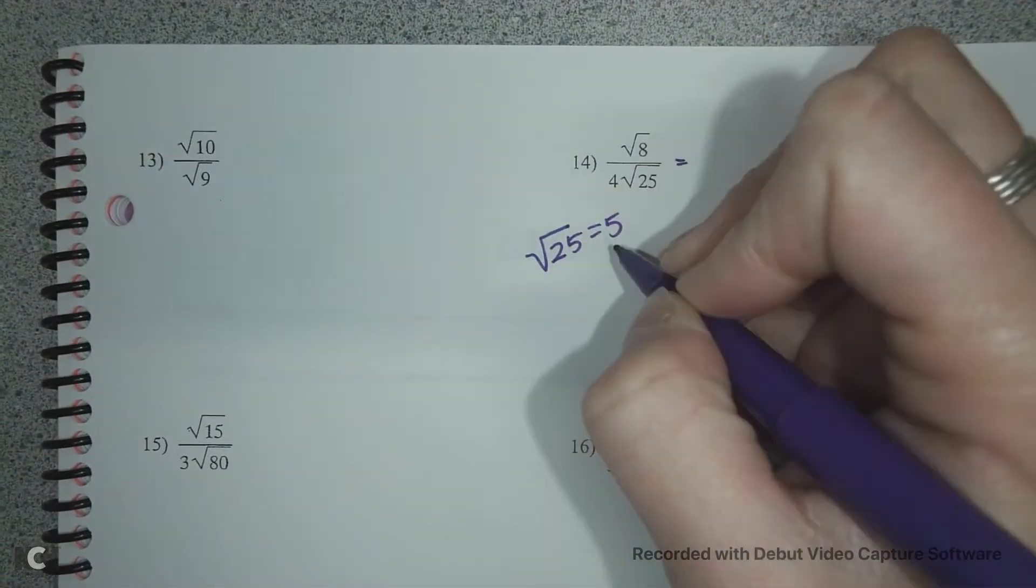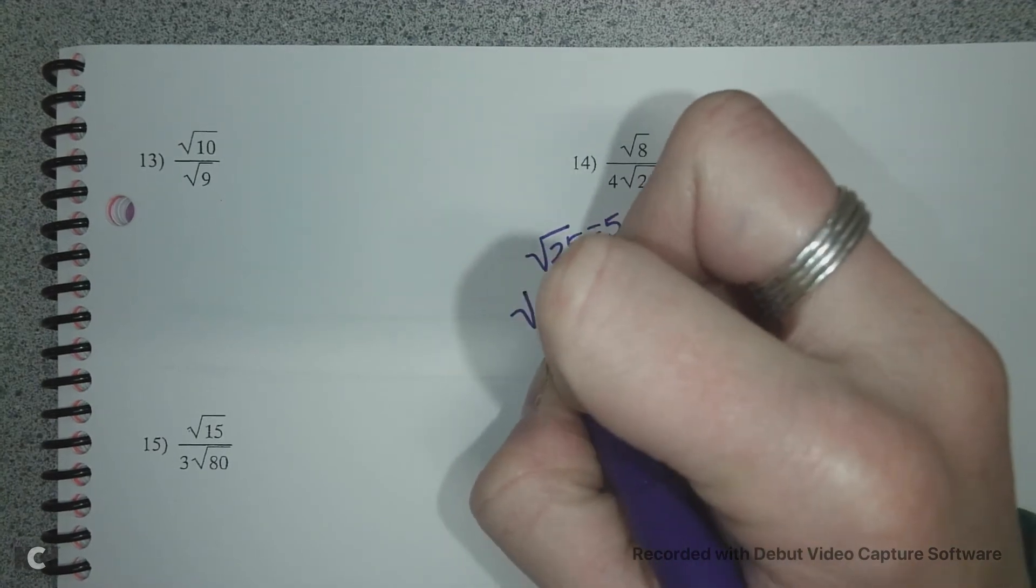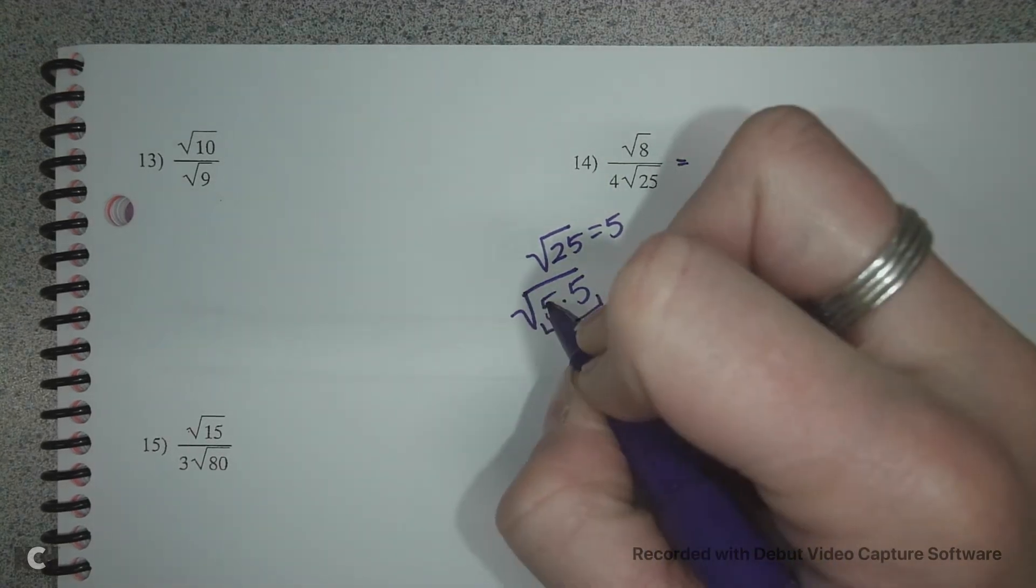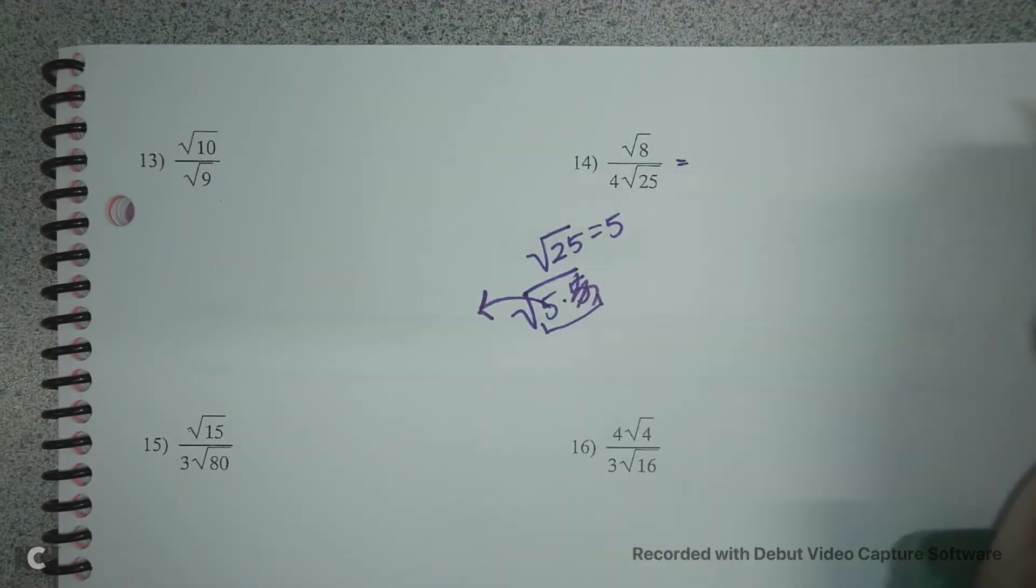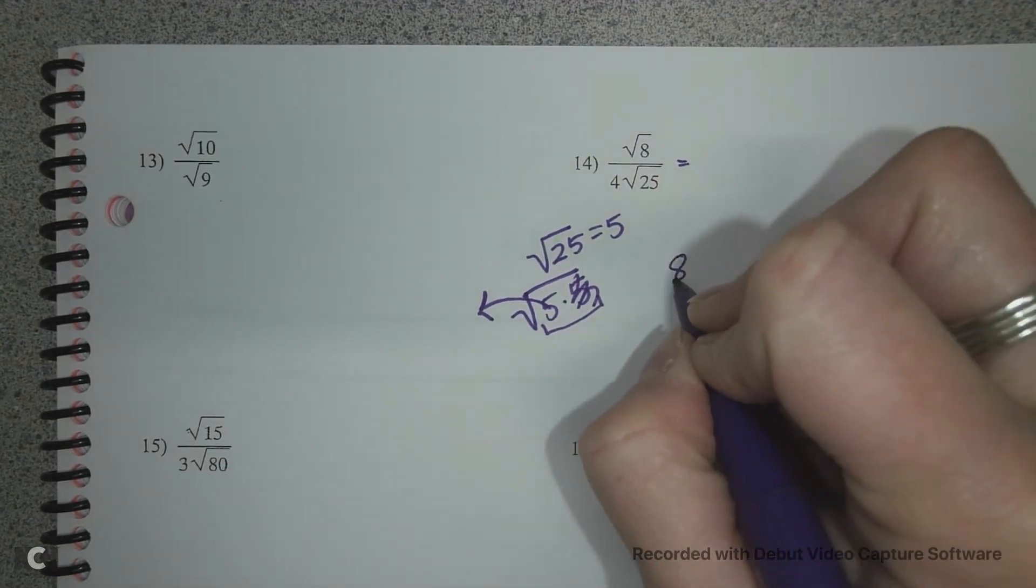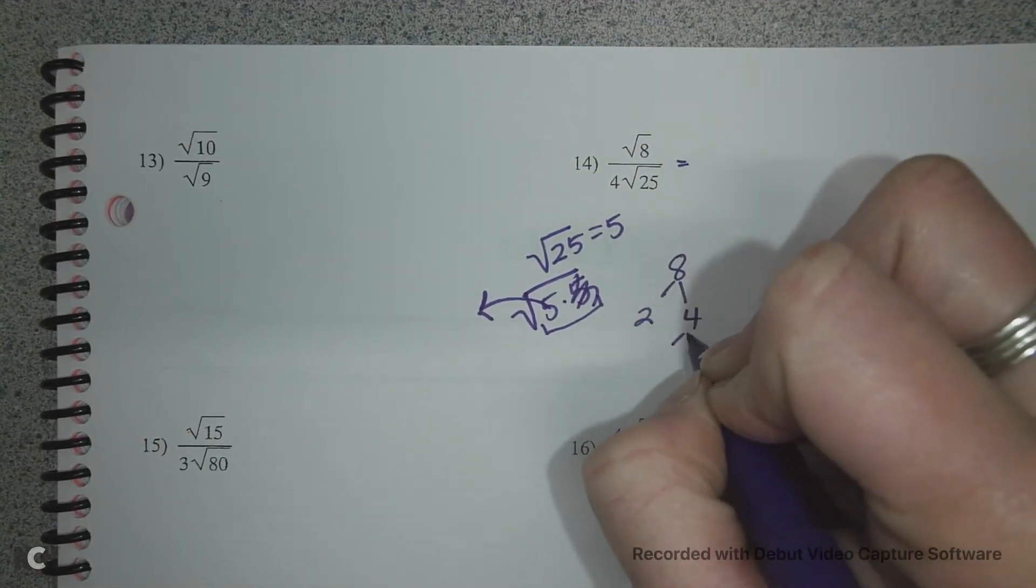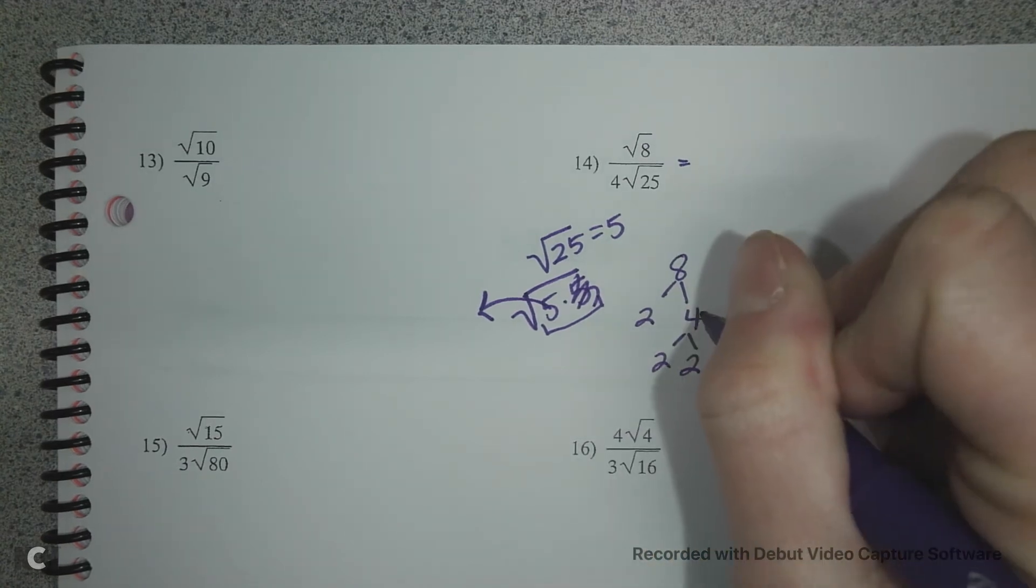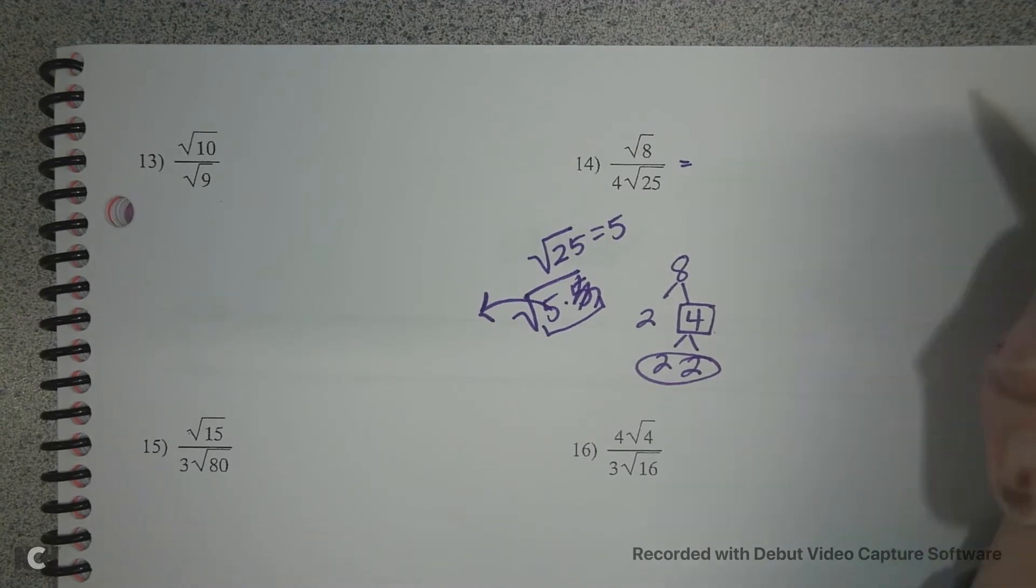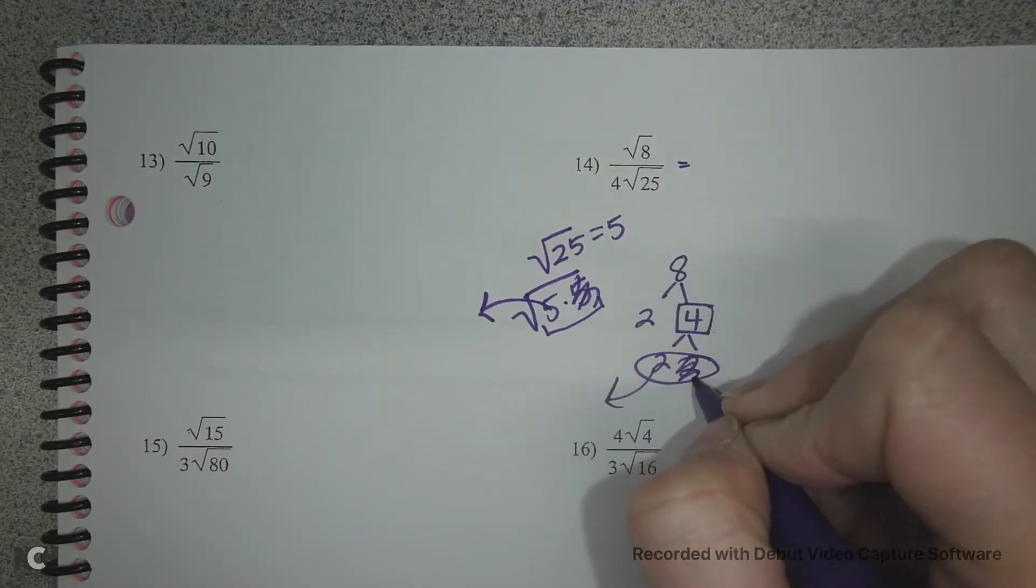But I know that 25 is made up of 5 times 5, and when you have a square number you're looking for a pair of numbers. One number comes out and the other goes away. So on the top I also know that 8 reduces. We have 2 and 4 and 2 and 2, so 4 is a perfect square. And these are the pairs, 2 and 2, so one number comes out and the other goes away.